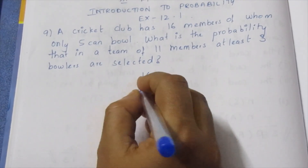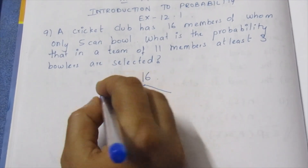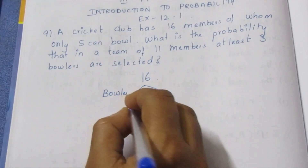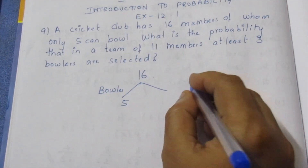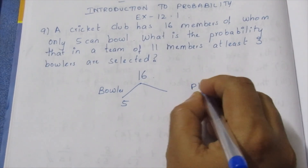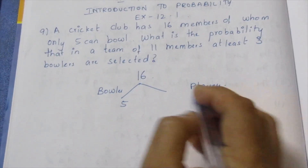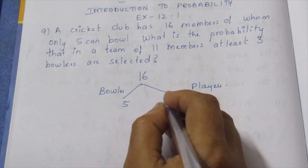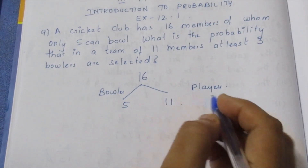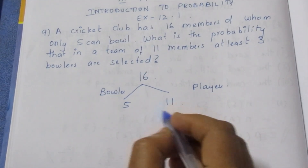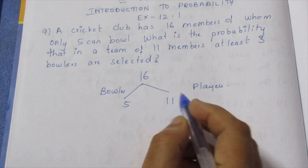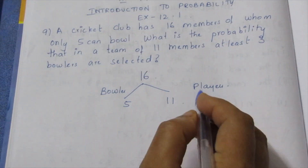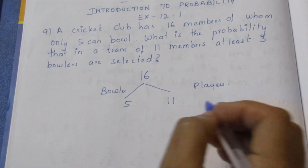Total members: 16, of which 5 are bowlers. The remaining players include batsmen, all-rounders, and fielders — we will consider all the players.